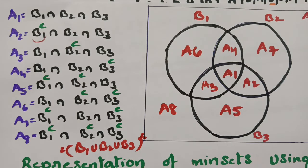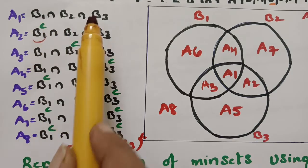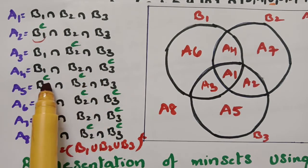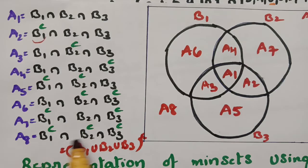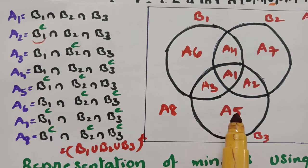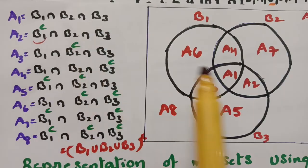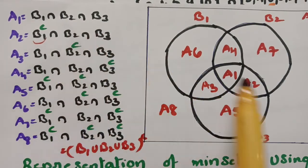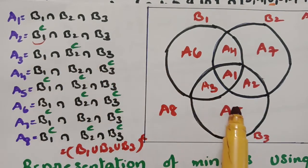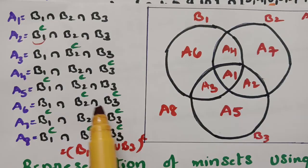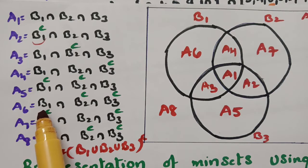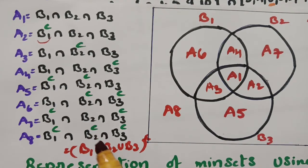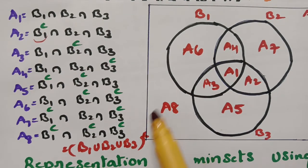To recap the Venn diagram method: write B1, B2, B3 for 8 times each. The first row (no complement) gives the center: A1. The pairs B2∩B3, B1∩B3, B1∩B2 give A2, A3, A4. The B1-only, B2-only, B3-only regions give A6, A7, A5 respectively. A8 is outside using De Morgan's law. So B1 region contains A6, B2 region contains A7, and A8 is outside the Venn diagram.